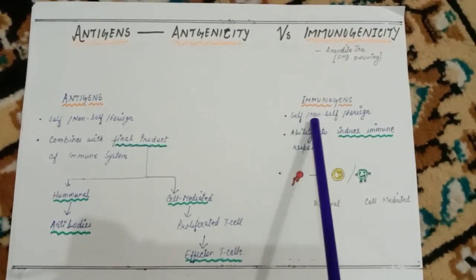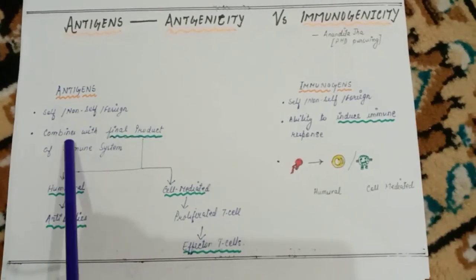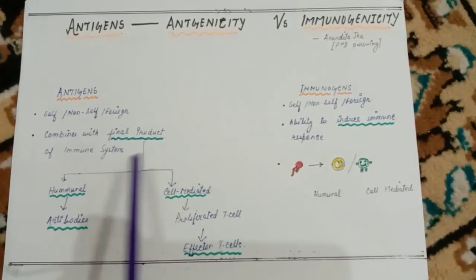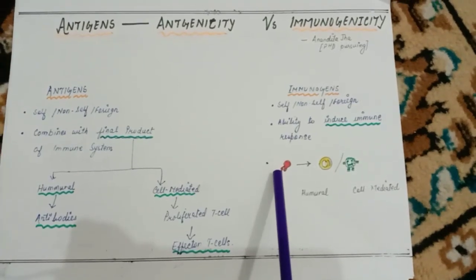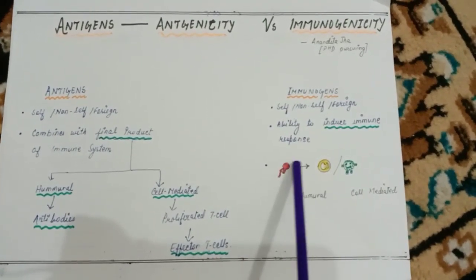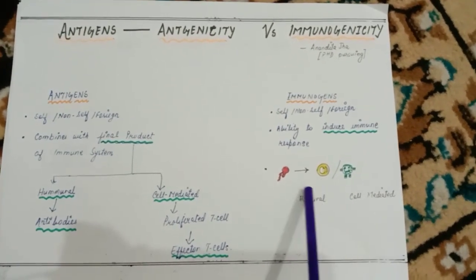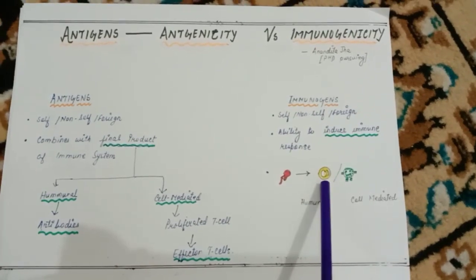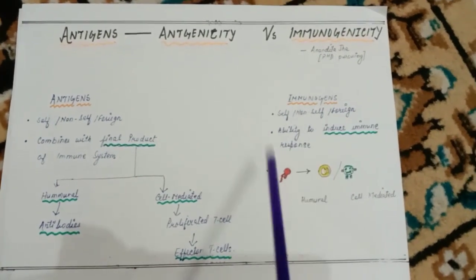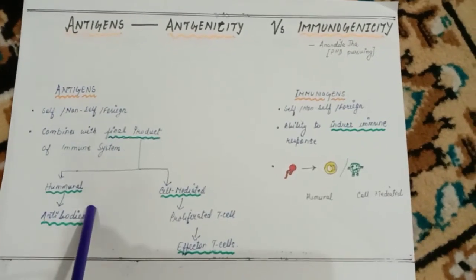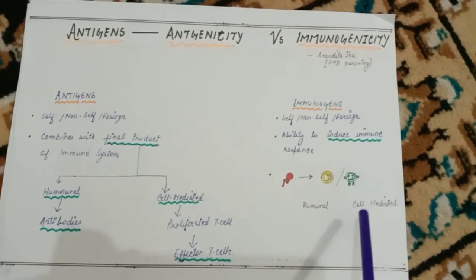Immunogens are similarly self, non-self, or foreign, but they have the ability to induce an immune response. The difference is: antigens combine with the final product of the immune system, whereas immunogens initiate the immune response itself. An antigen can initiate both humoral and cell-mediated responses — not only through T cell activation of B cells into plasma cells, but also directly. This property is immunogenicity.